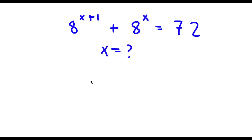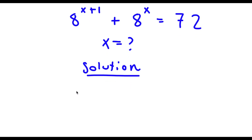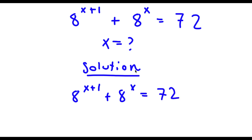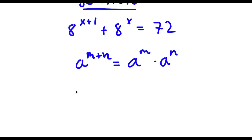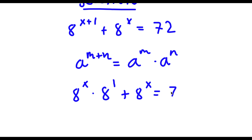I want to find the value of x here. For my solution, I start with 8 to the power of x plus 1 plus 8 to the power of x is equal to 72. Now if I have something in the form 8 to the power of m plus n, this is equal to 8 to the power of m times 8 to the power of n. So 8 to the power of x plus 1 equals 8 to the power of x times 8 to the power of 1. So now I have this plus 8 to the power of x is equal to 72.